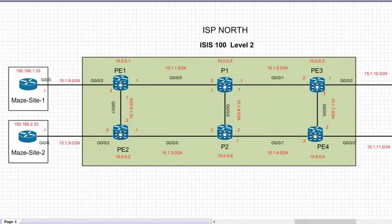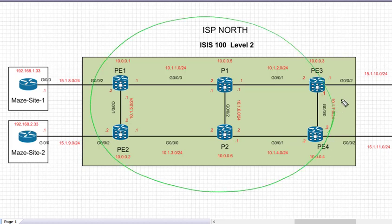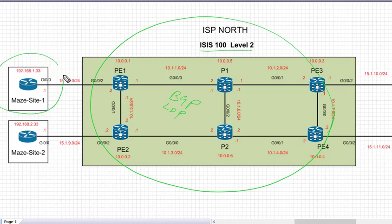Welcome to the IOS XR series, lesson number 8. Today we're going to take a look at MPLS Layer 3 VPNs in IOS XR. It's going to be a little bit different from regular IOS and IOS XE. We've been building our MPLS core over the last few weeks — we built ISIS as our IGP, then LDP as a label protocol, and then multi-protocol BGP.